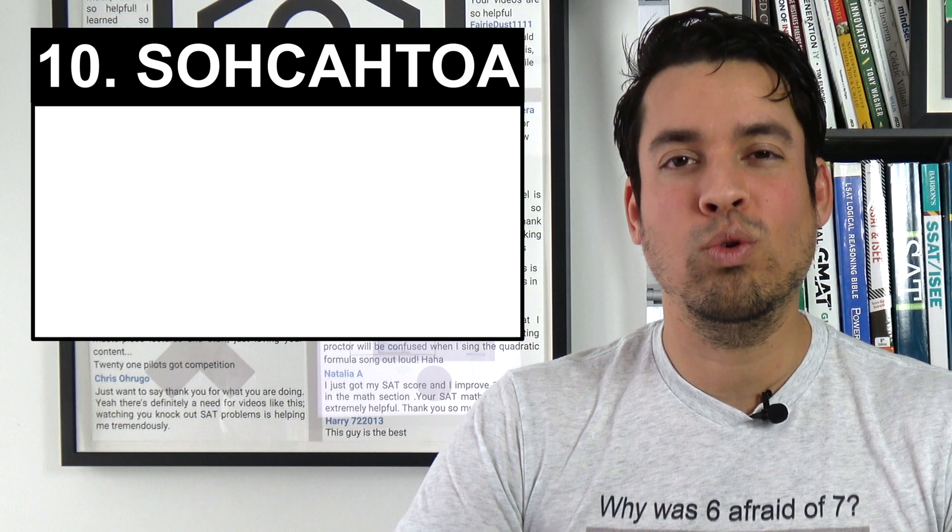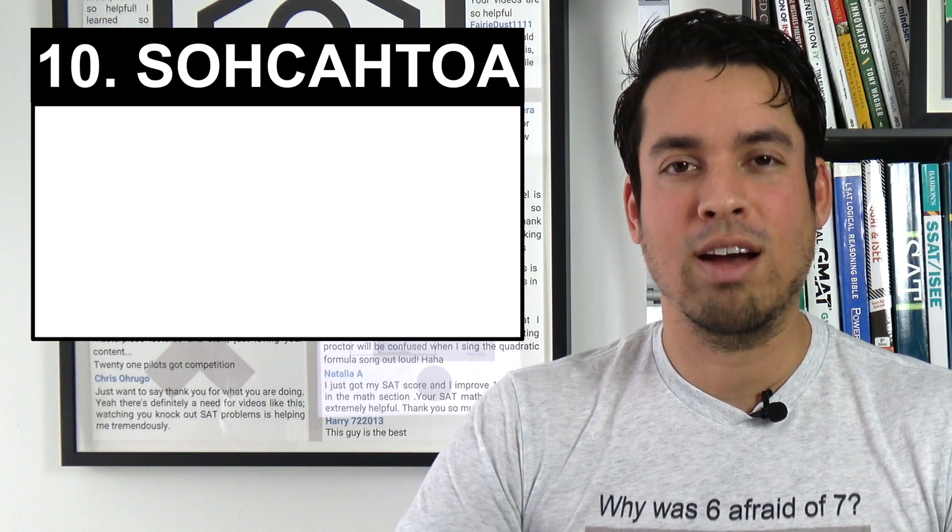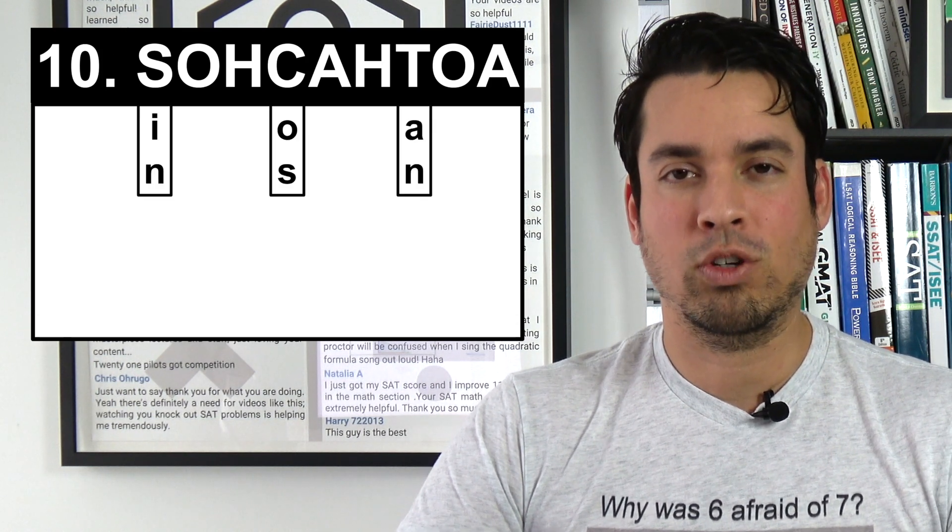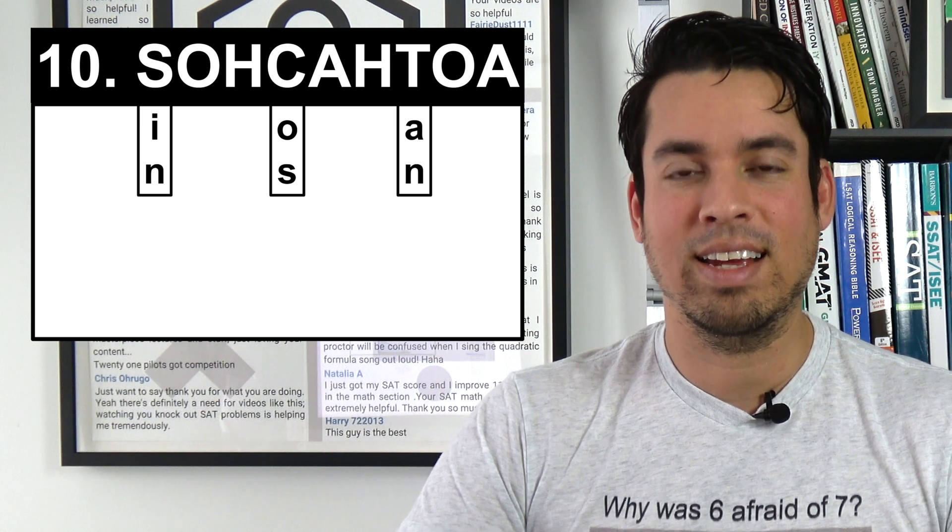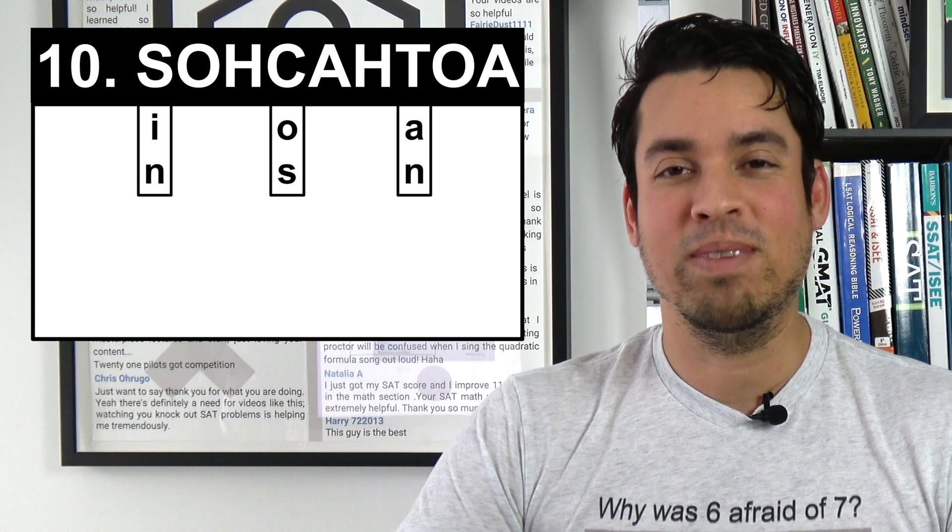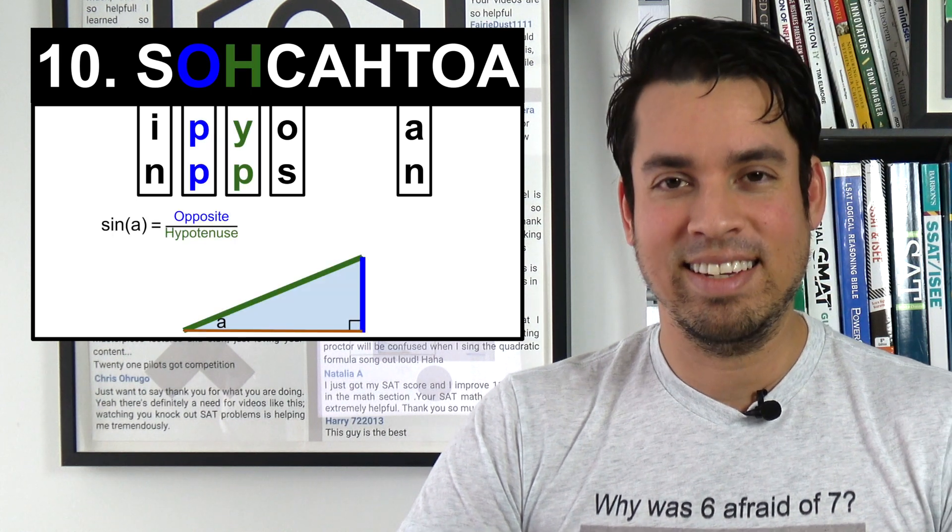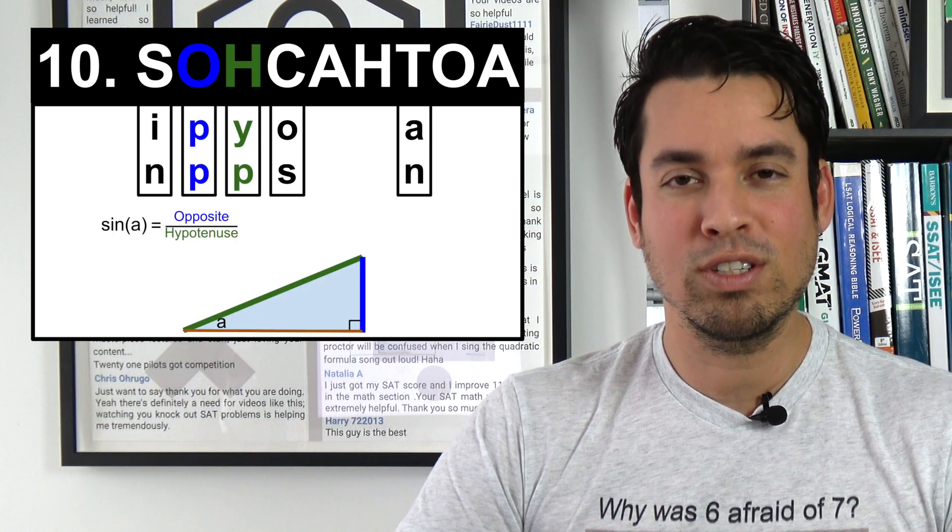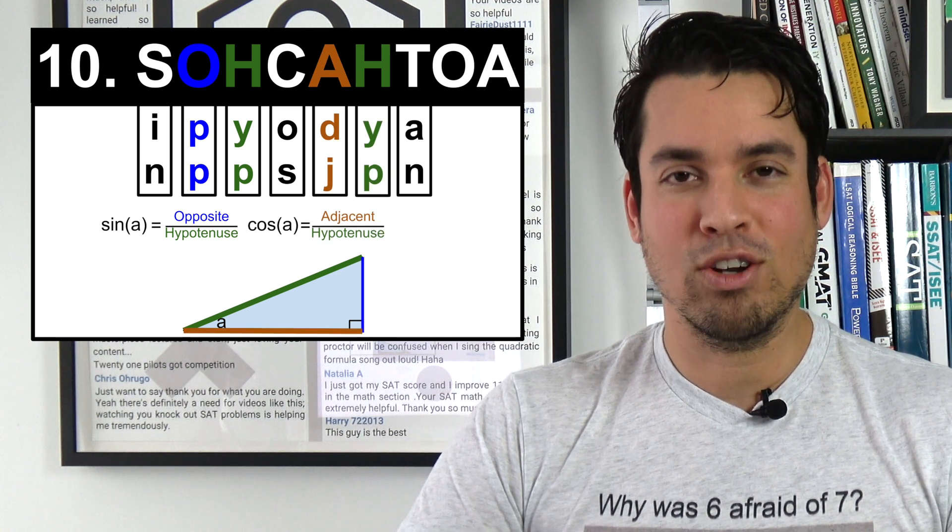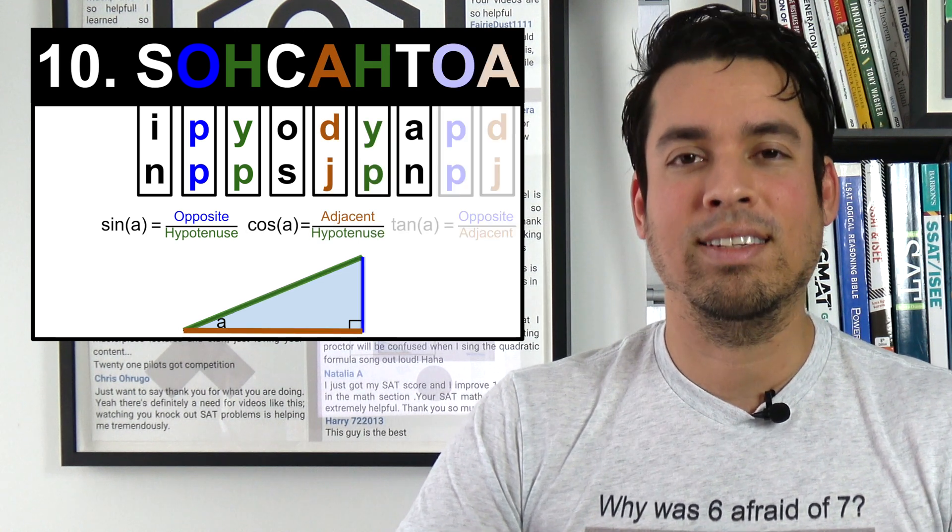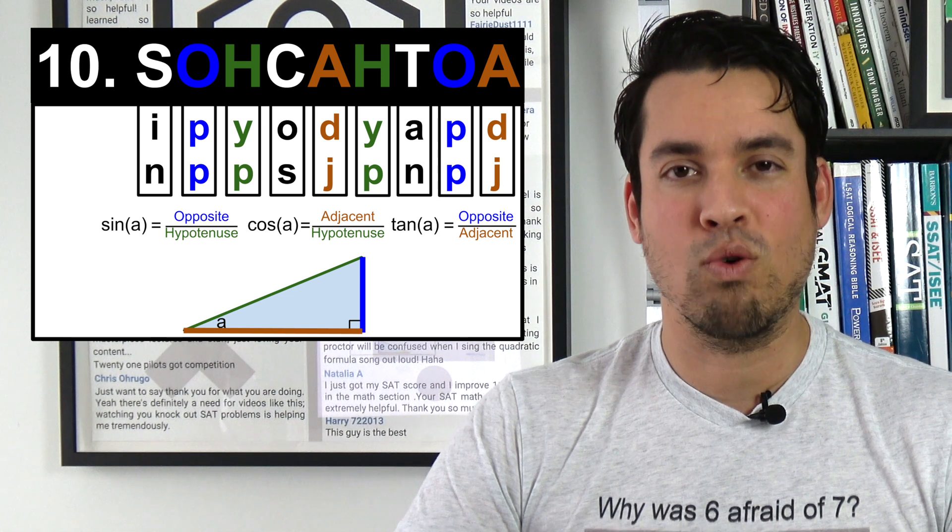Next on the list we have an acronym that is essential to understanding and learning how to use the three trigonometric functions sine, cosine, and tangent, and that acronym is SOH CAH TOA. That stands for sine is opposite over hypotenuse, cosine is adjacent over hypotenuse, and tangent is opposite over adjacent.